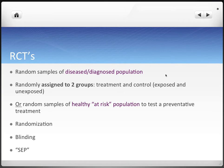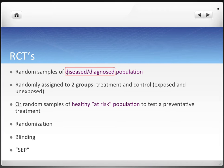RCTs take random samples of a diseased and diagnosed population. This is different from other study designs we've seen so far, where we were looking at the entire population, or specifically people who were healthy and at-risk, or people exposed or unexposed to a certain risk predictor. This is the first and only study design where we look at primarily only diseased people. We then take these diseased people and assign them to two groups — a treatment group and a control group — that are either exposed or unexposed to treatment.